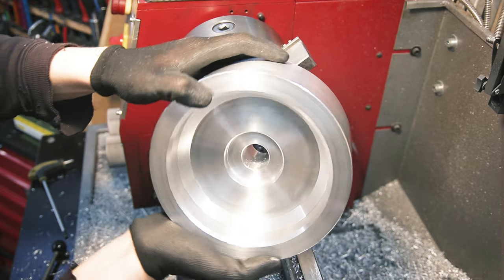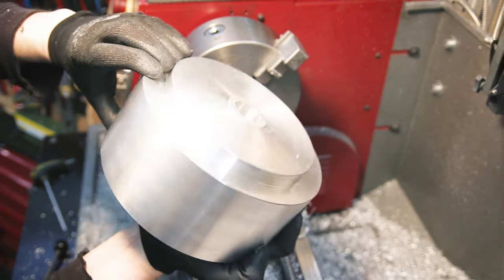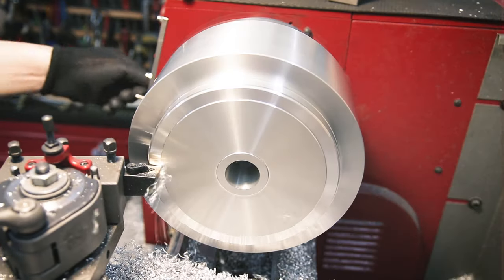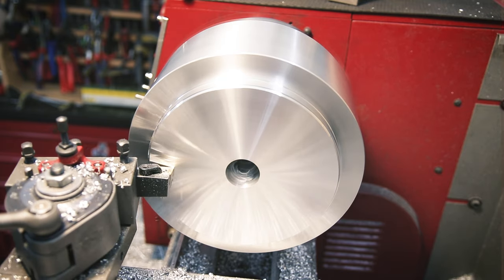That's one side done now. I can flip it again, and thanks to the bowl shape, I can now just grab the inside surface using the chuck and machine the other side. That step I created has to go now.